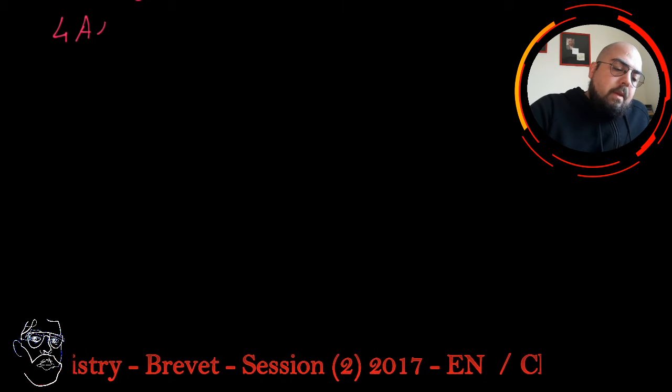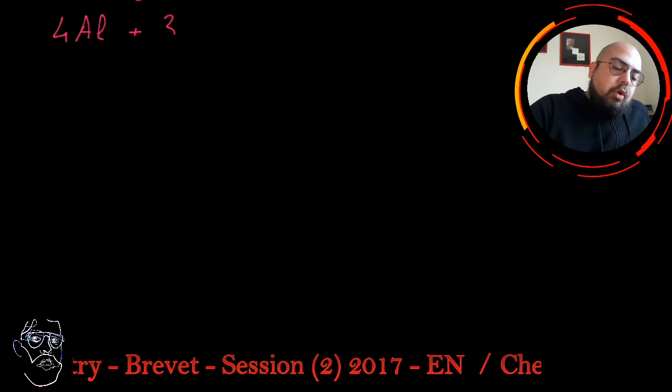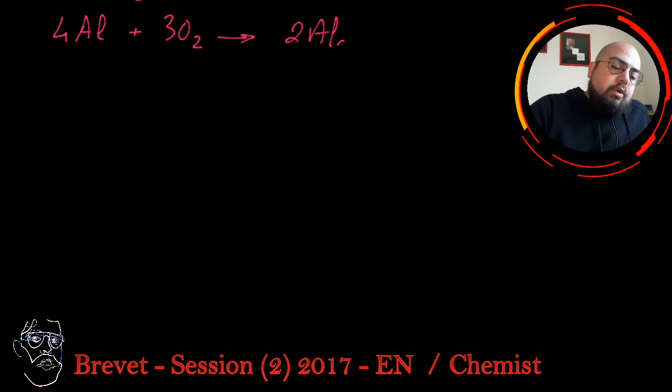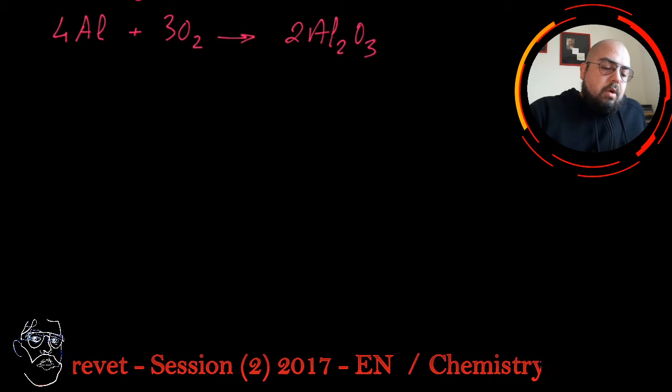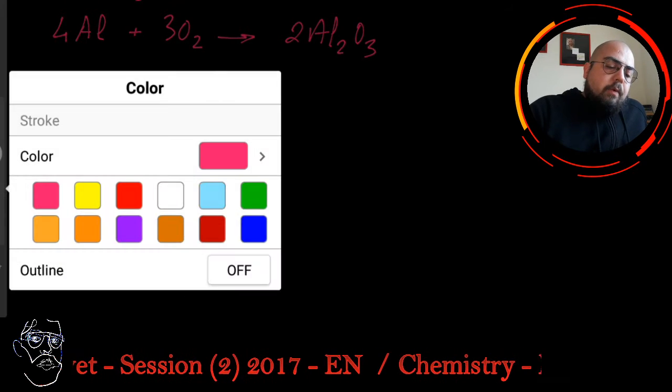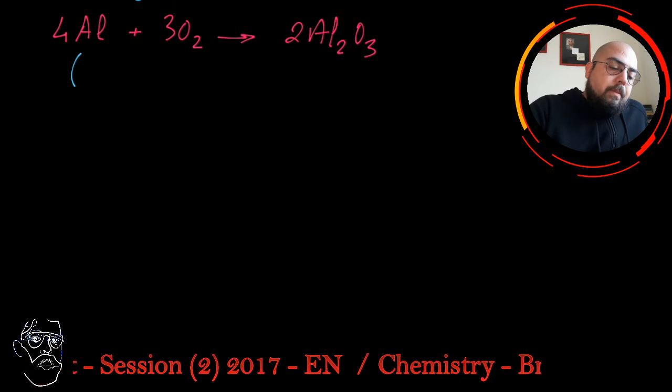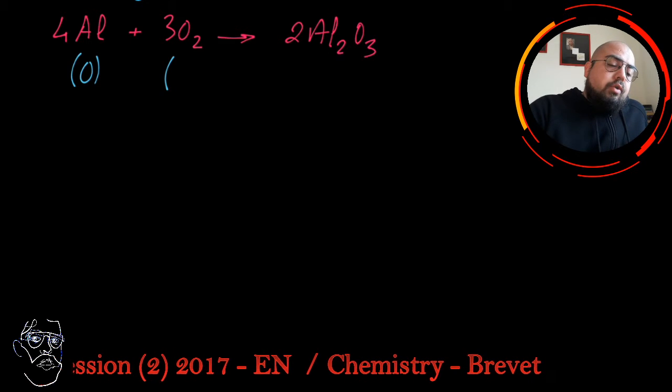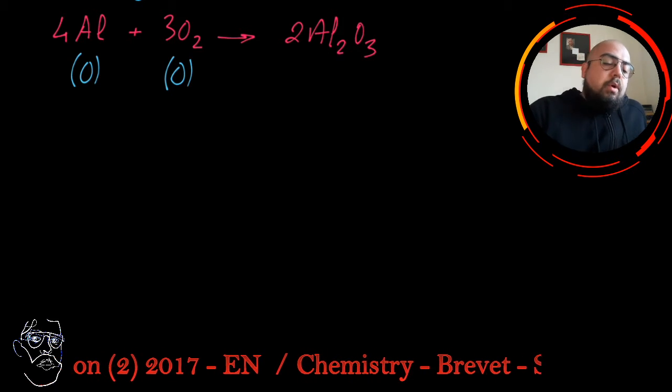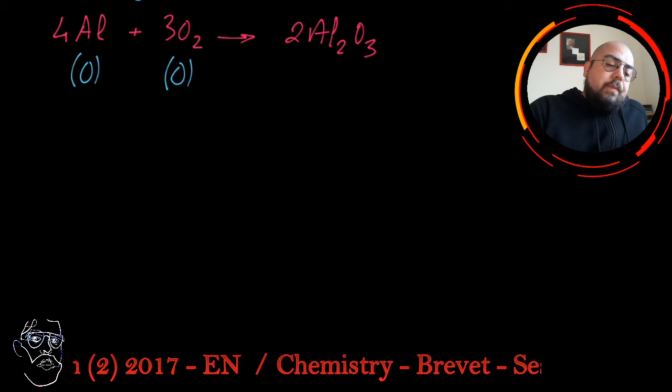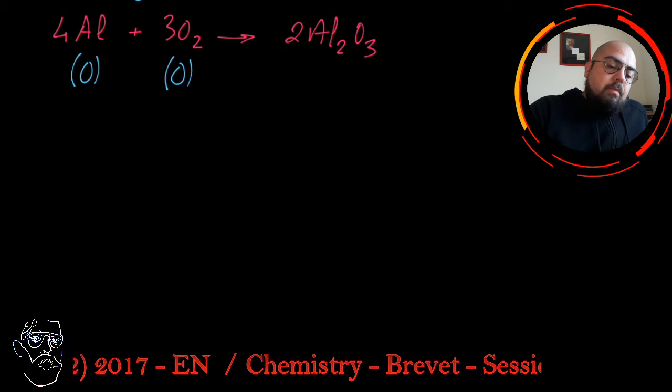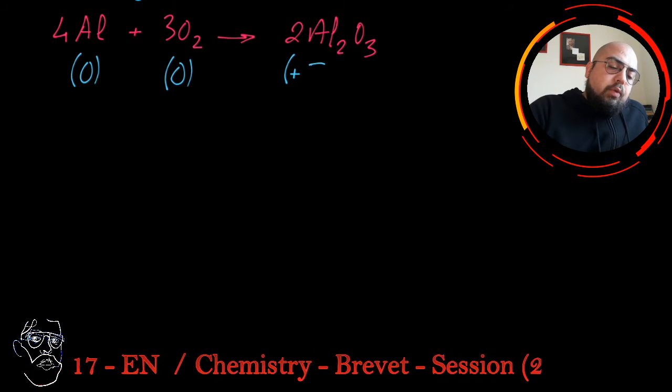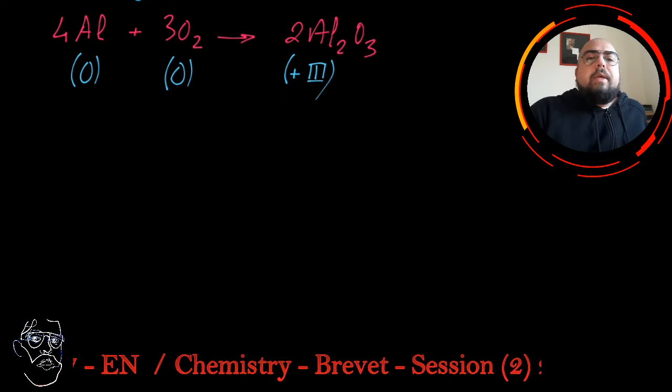We have 4Al plus 3O2, which gives us 2Al2O3. We have to check the number of oxidation for each part. Al is zero, it's a simple compound. O2 is zero again because it's purely oxygen. In Al2O3, we have to calculate.